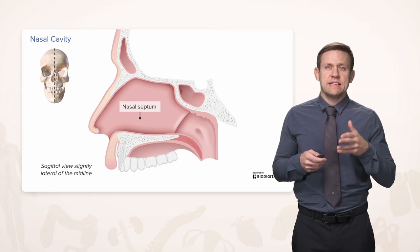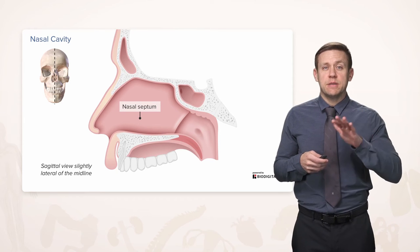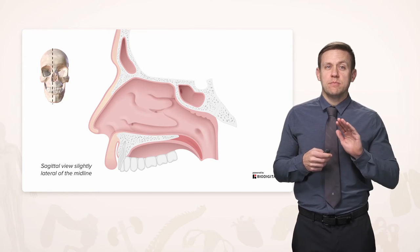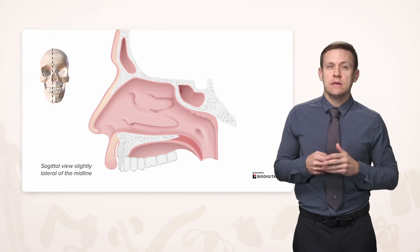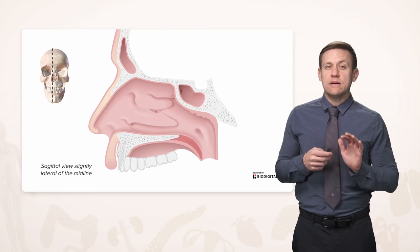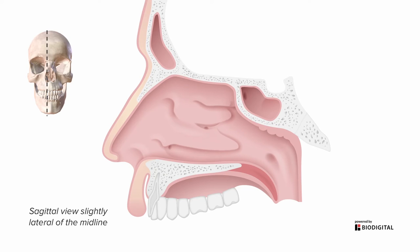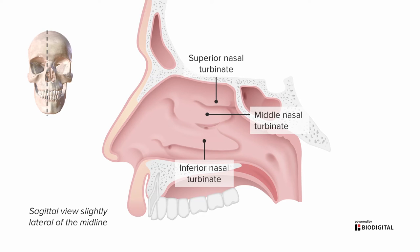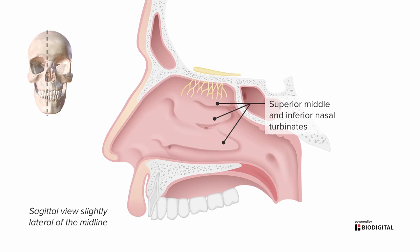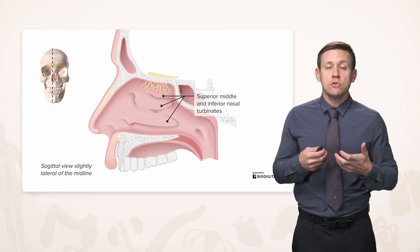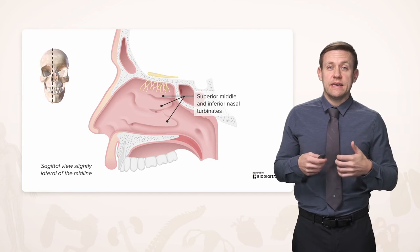Let's go back to this midline sagittal view where we again see the nasal septum, this time covered with some mucosa. If we take away the septum by moving just to the right of midline, we will now see the right lateral wall of the nasal cavity and see these concha or turbinates — the superior, middle, and inferior nasal turbinates. There are a lot of functions to these turbinates. The air we breathe in is fairly dry and cold compared to the rest of the body, and they create turbulence in conjunction with the mucosa that lines them, helping to warm the air, humidify it, and help clean it.